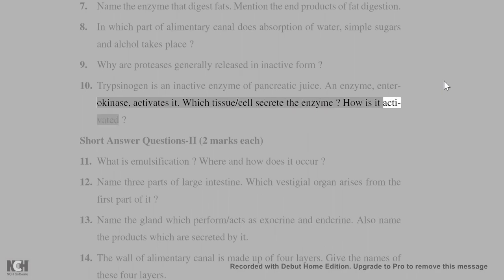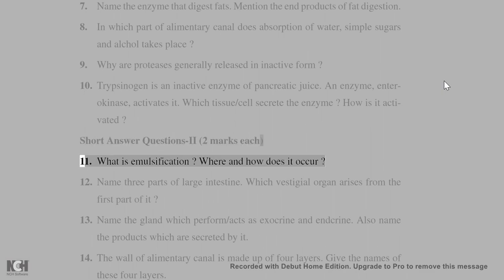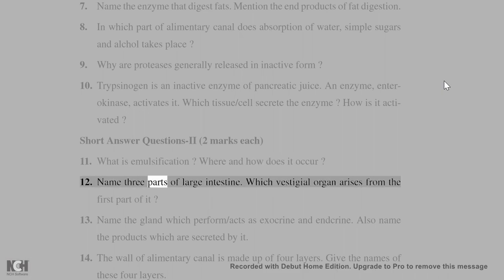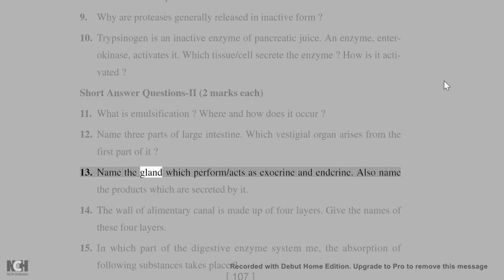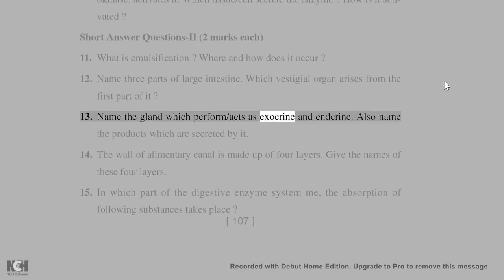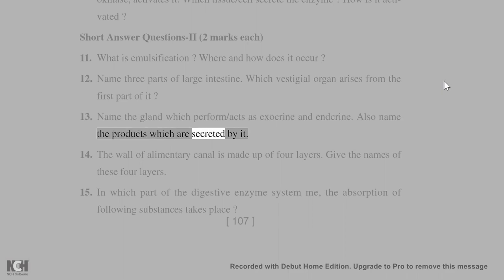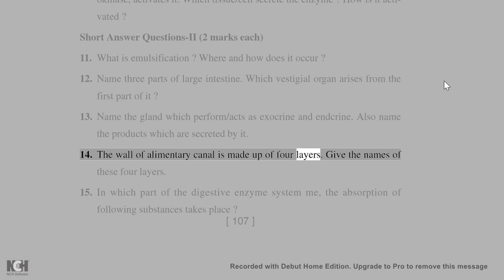Short answer questions (2 marks each): 11. What is emulsification? Where and how does it occur? 12. Name 3 parts of the large intestine; which vestigial organ arises from its first part? 13. Name the gland which acts as both exocrine and endocrine; name the products secreted by it. 14. The wall of the alimentary canal is made up of 4 layers — give their names.